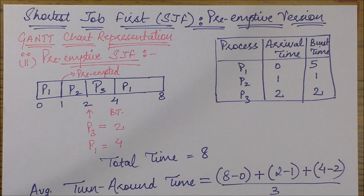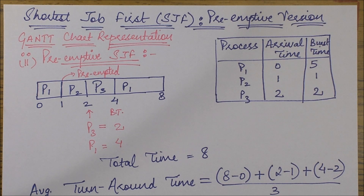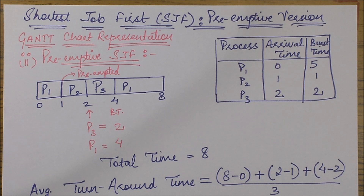We have the preemptive SJF version here. What does preemptive SJF mean? Preemptive means that if I feel there is some benefit in stopping a particular process for a small time interval and giving the CPU to some other process, then restarting this process later, I would make that decision. How do I decide there is benefit? We decide by seeing if a job arrives with a shorter burst time — a smaller execution time — then we stop the current executing task and give the CPU to that smaller burst time job. Once it completes, we continue the job we stopped.